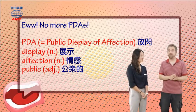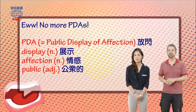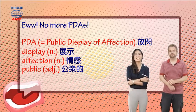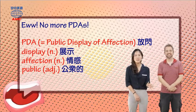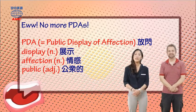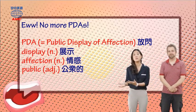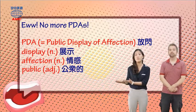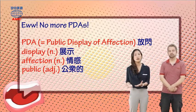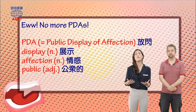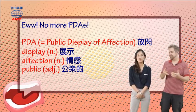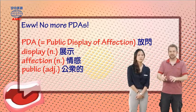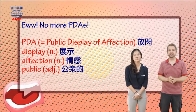so public displays of affection, PDAs. And, of course, PDAs often make other people feel uncomfortable. 嗯,所以Cynthia才说, eww,好噁哦, no more PDAs,不要再放闪了,好吗? 那PDA代表的是三个英文字, public displays of affection. Public是公众的, displays是展示, affection就是情感. So, Cynthia also kind of then, like, stop doing that, stop doing that.